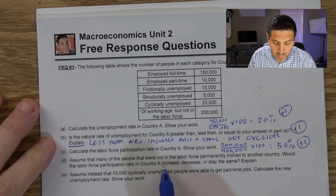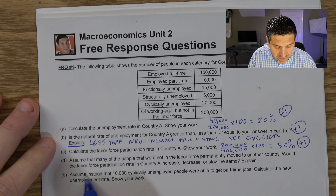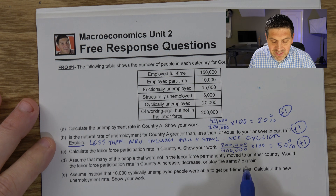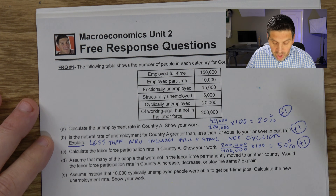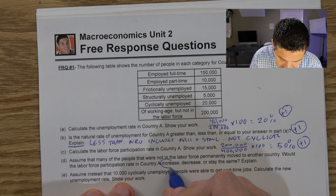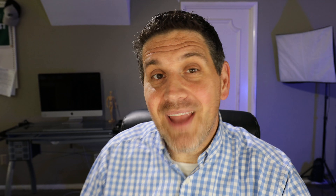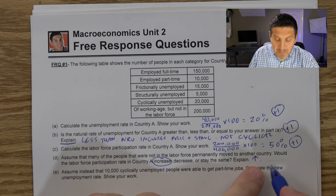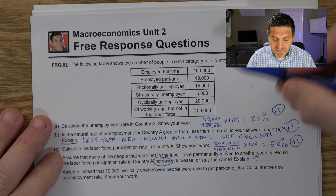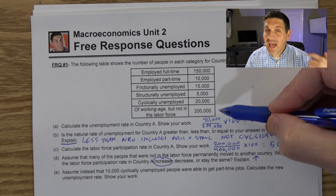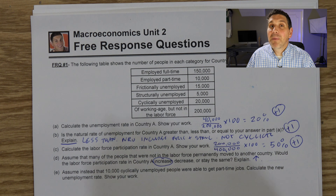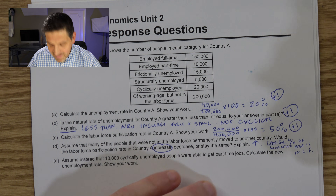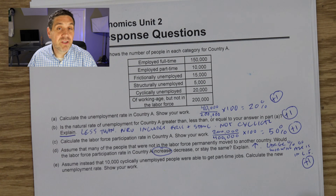Assume that many people who were not in the labor force permanently moved to another country. Would the labor force participation rate increase, decrease, or stay the same? It is going to increase. If the number of working-age people not in the labor force falls, then the percentage of people who are in the labor force gets higher. A larger percent of the working-age population is now in the labor force. Make sure to explain when your teacher tells you to explain.